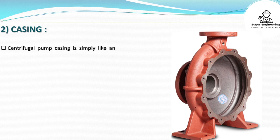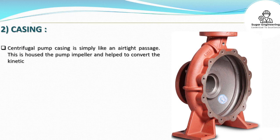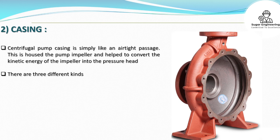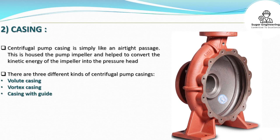Casing: The centrifugal pump casing is simply like an airtight passage. It houses the pump impeller and helps to convert the kinetic energy of the impeller into pressure head. There are three different kinds of centrifugal pump casings: volute casing, vortex casing, and casing with guide blades.